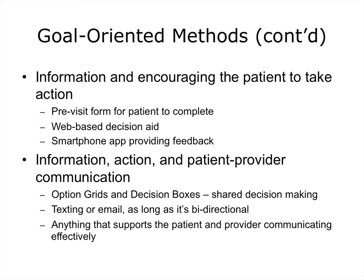The third goal-oriented method is where you provide the patient with information and want them to take action, with the ultimate hope that it will improve patient-provider communication. This is perhaps the most difficult one. Options include option grids and decision boxes — specific tools that providers can use to engage in shared decision-making with patients. It could also be texting or email, as long as it is bi-directional. These goal-oriented methods apply to patients as well as the patient's significant others — friends, families, and others involved in caring for that patient.